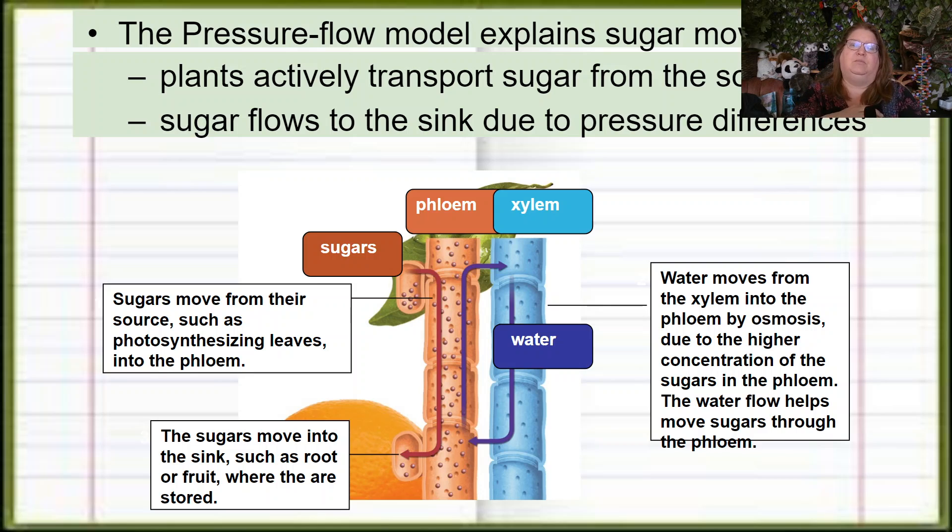That goes back to the idea that phloem can move in any direction. Phloem can move sugars up from the wintertime to spring - they can move the sugars up the tree. Or spring, summer, fall, they're going to be making the sugars in the leaves and then moving it wherever it needs to go.